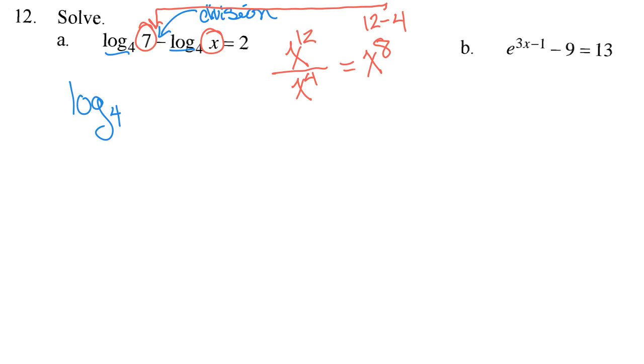So I'm going to change this to a single log because I cannot solve a log problem until it's written as a single log. The logs don't just disappear. You have to write it as a single log first. So it's log base 4 of 7 over x equals 2. Now, if I had logs on both sides, I could ignore my logs and solve what I have left. But I don't have logs on both sides.